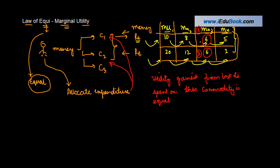Why? Because from the last rupee that he spent on both these commodities, the marginal utility is equal. Let me give you another example that will clarify this a bit more.